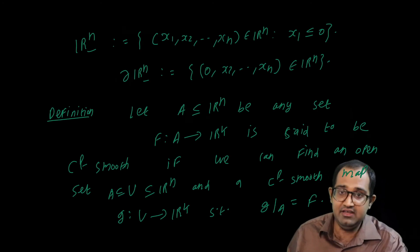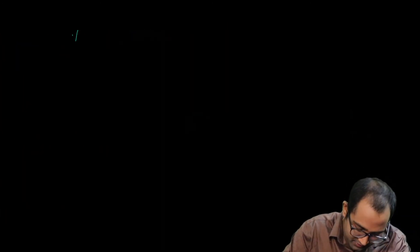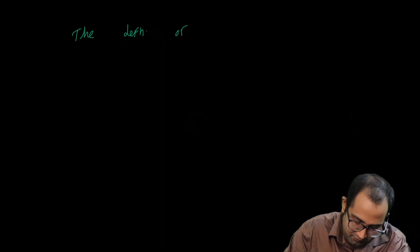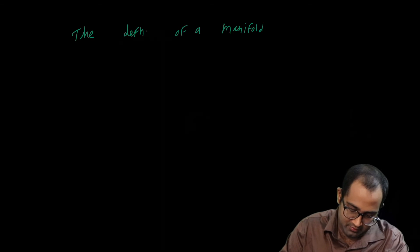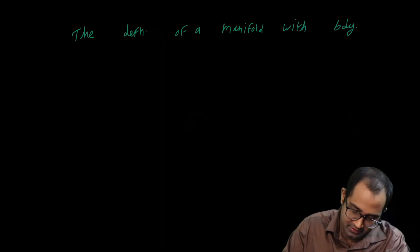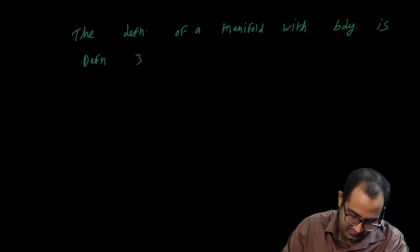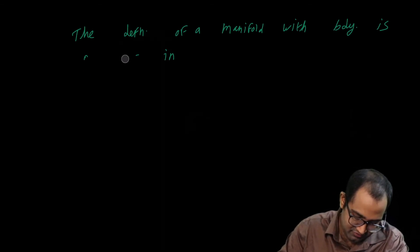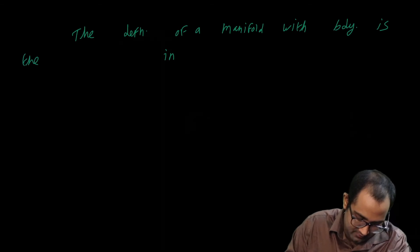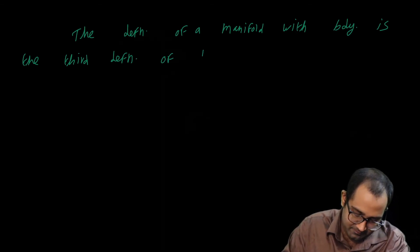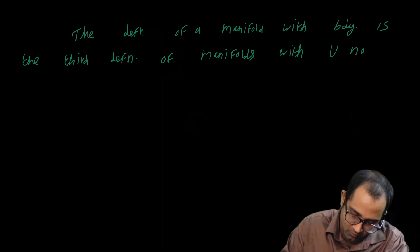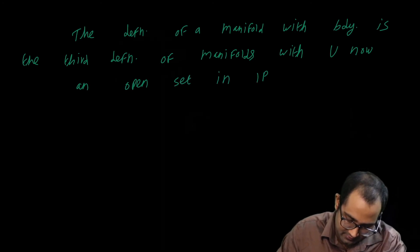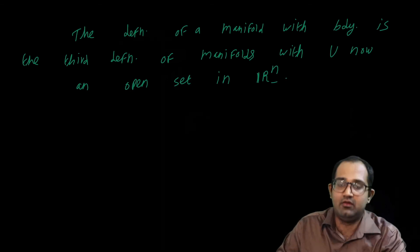Once we have made this definition, the definition of a manifold with boundary is exactly the same as the third definition of manifold via local parametrizations, with U now an open set in Rn minus.